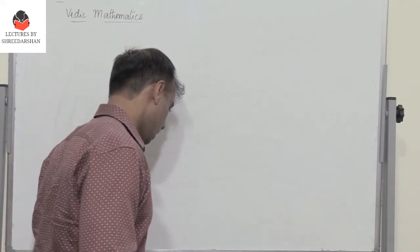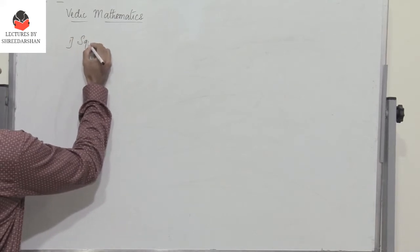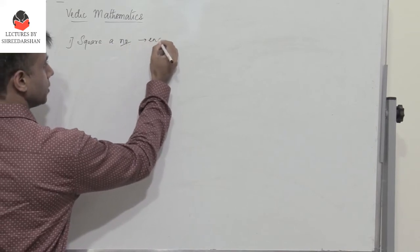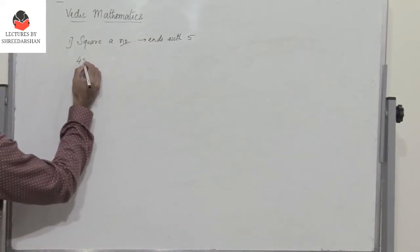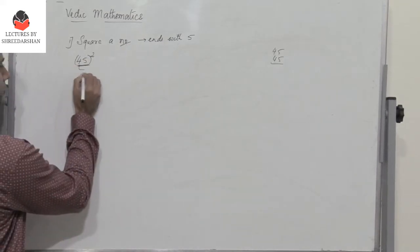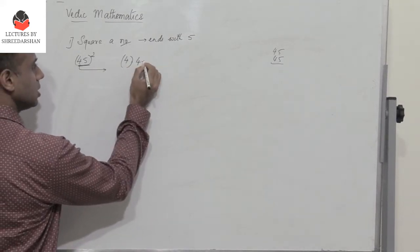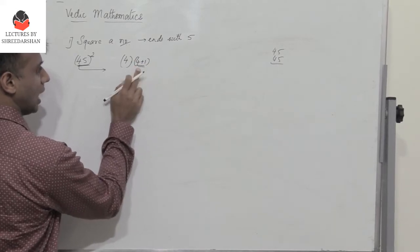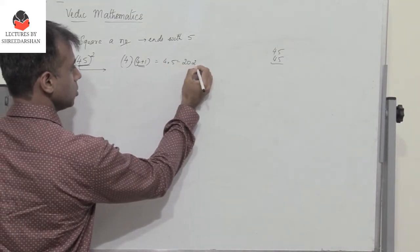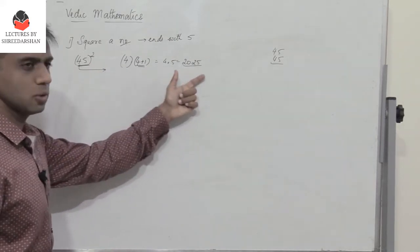The first technique is squaring of a number ending with 5. Say I need to find 45 squared. Since we need to find the square of 45, take the first digit — 4 — and multiply it with the first digit plus 1, so 4 into 5 which is 20, and then just attach 25. So 2025 is the answer; 45 squared is 2025.